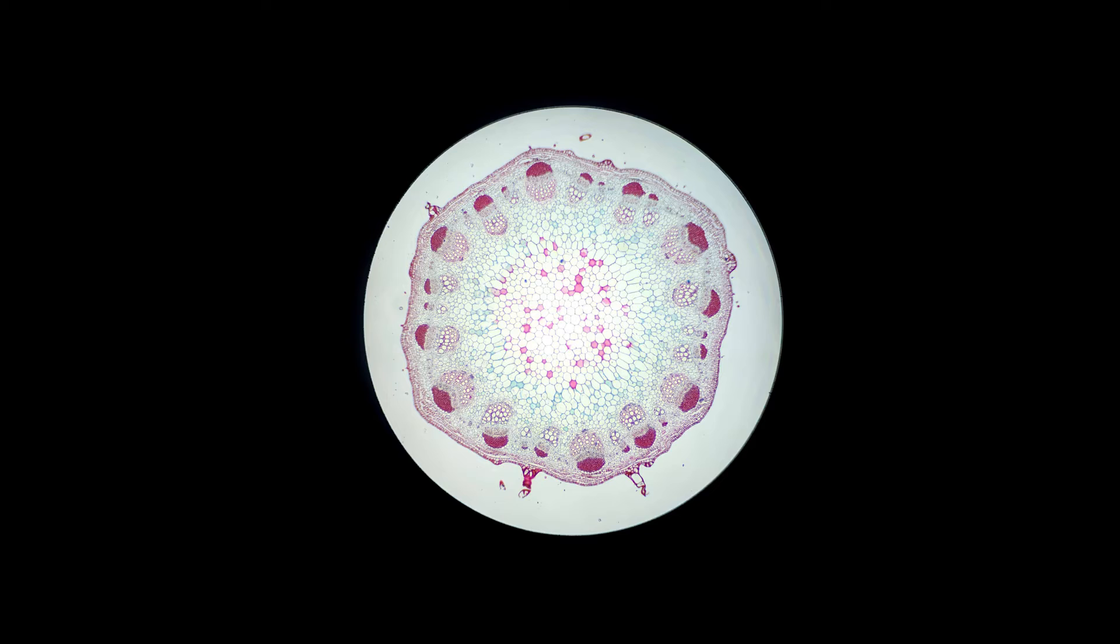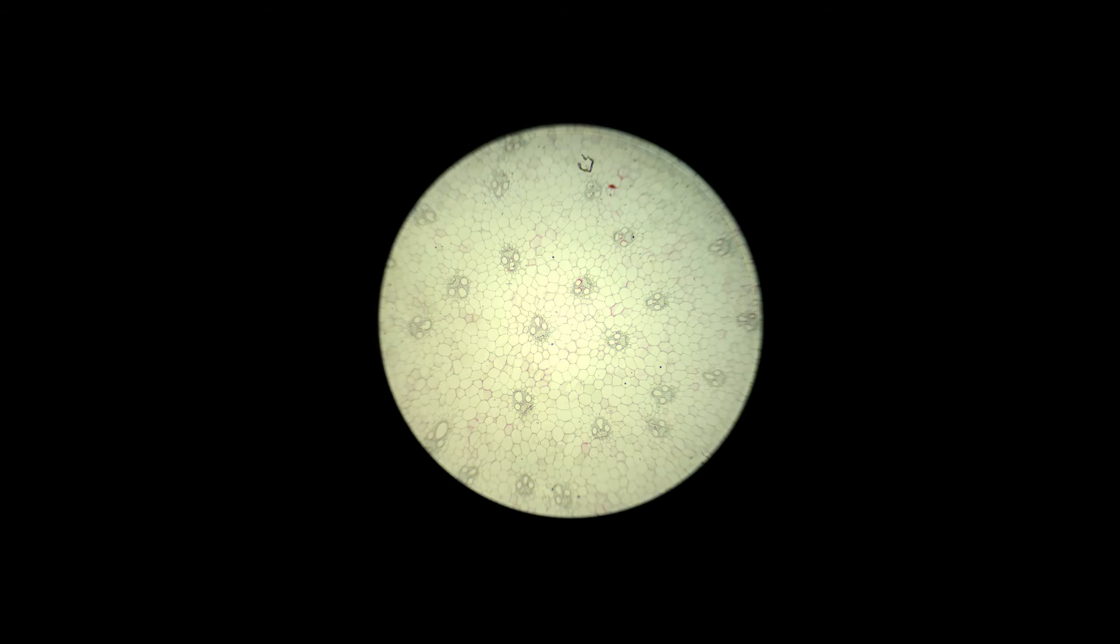All right, so let's go ahead and look at a monocot stem. So here you see there's no ring. The vascular structures are just scattered all throughout the stem. There's no real organization or pattern.